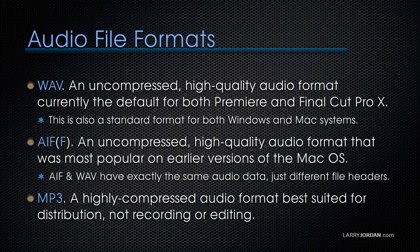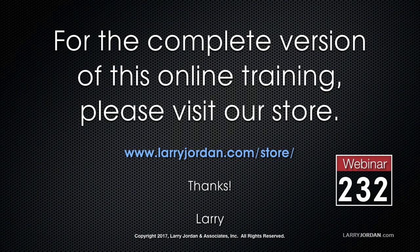A WAV file is an uncompressed, high-quality audio format that's currently the default for both Premiere and Final Cut Pro X. This is also a standard audio format for both Windows and Mac systems. AIF is an uncompressed, high-quality audio format that was popular on earlier versions of the Mac OS. AIF and WAV files have exactly the same audio data — they just have different file headers. An MP3 is a highly compressed audio format best suited for distribution, not for recording or editing. This has been an excerpt of a recent Power-Up Webinar, taking a look at audio fundamentals inside Apple's Final Cut Pro X.